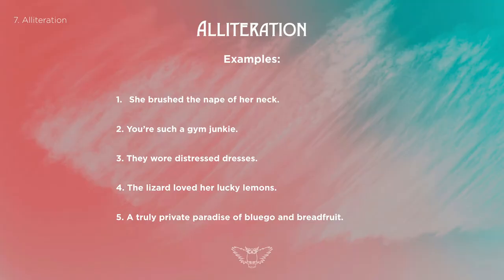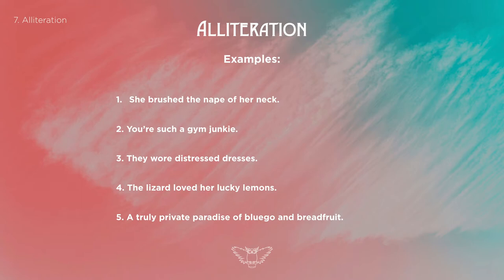Number three: they wore distressed dresses — the alliteration is 'distressed dresses,' that repeated D sound. Number four: the lizard loved her lucky lemons — it's the repeated L sound: lizard, loved, lucky, lemons. And number five: a truly private paradise of bluegoo and breadfruit. This quote has two versions of alliteration — 'private paradise' with the repeated P, and 'bluegoo and breadfruit' with the repeated B.